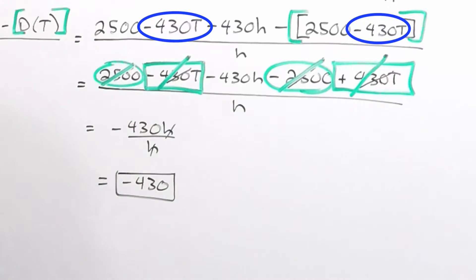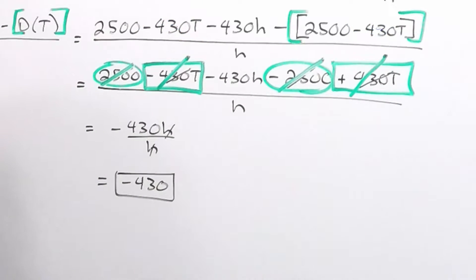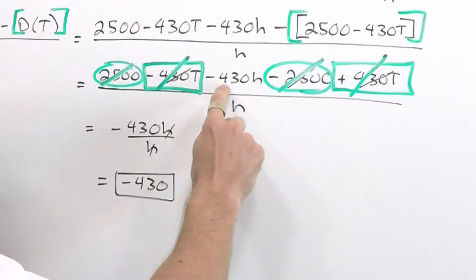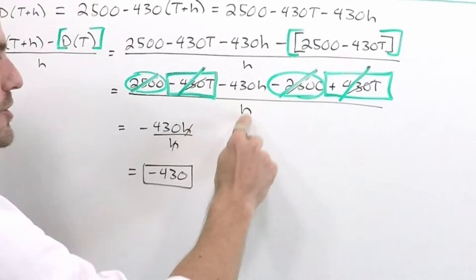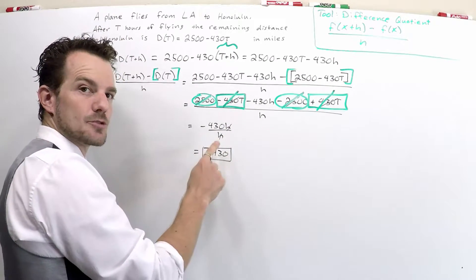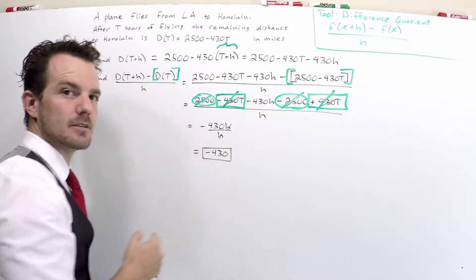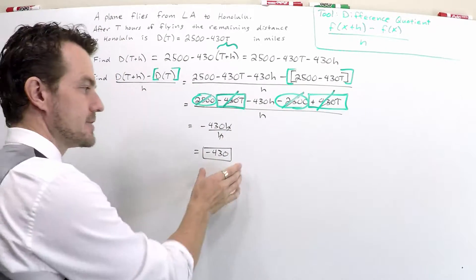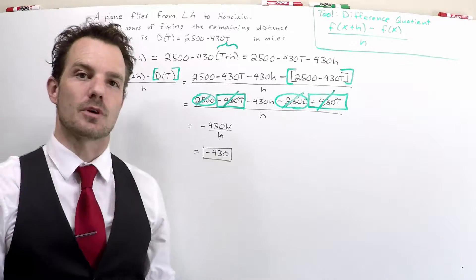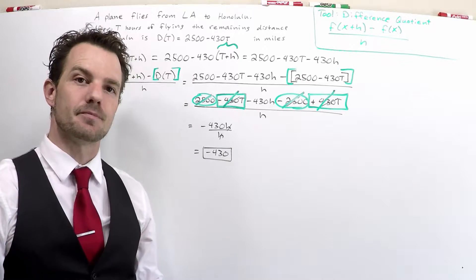What we're effectively left with is minus 430H over H. Once we rewrite it, it's clear the H's cancel and the answer is negative 430.